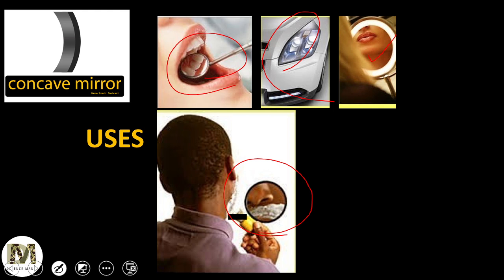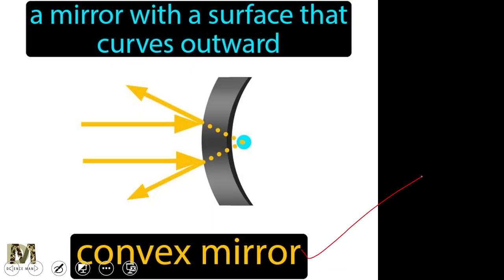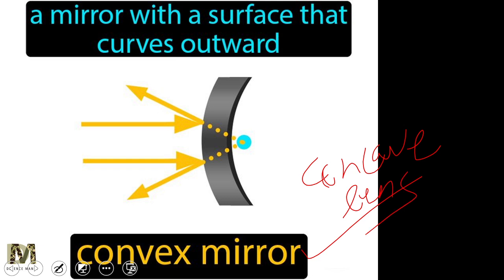Mirror concept is very important. The next video will be on lenses, which is another very important topic. If you understand mirrors, lenses will be easy — because concave mirror's properties match with convex lens, and convex mirror's properties match with concave lens. So understanding mirrors is critical before moving to lenses.